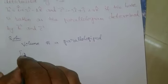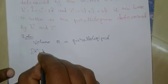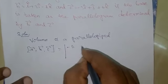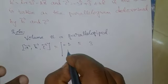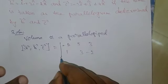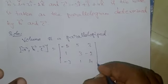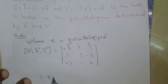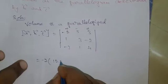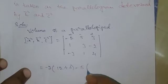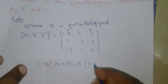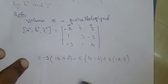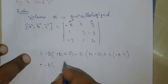The volume of the parallelepiped is the scalar triple product of a vector, b vector, and c vector. Computing: -2 into (4 - 6) plus (-5) into (1 + 9) cross, minus 2 into (2 + 14).